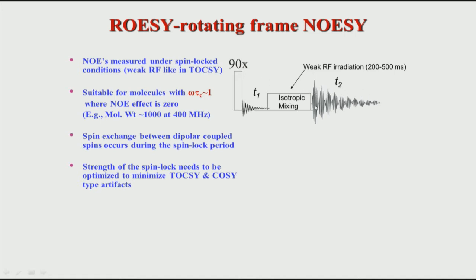In ROESY we do it in a different manner. Here we apply a 90-degree pulse, then allow spin A to evolve — the same approach as in TOCSY. Then we mix the magnetization by applying what is called a spin lock, which is a weak irradiation applied for a duration of 200 to 500 milliseconds. During this period, similar to what happens in NOESY, polarization from one spin is transferred to the second spin, which carries with it the information of the chemical shift during T1.